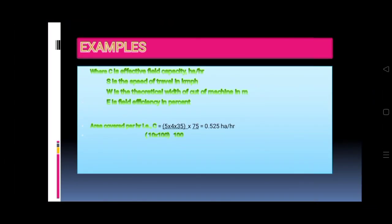Where C is effective field capacity hectare per hour, S is the speed of travel in kilometer per hour, W is the theoretical width of cut of machine in meter, E is field efficiency in percent.